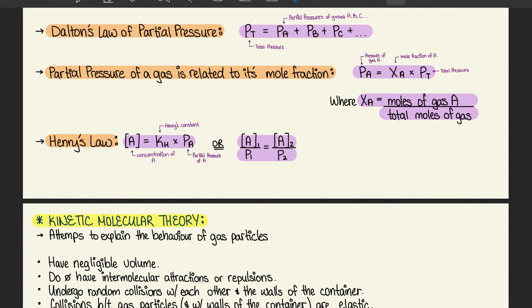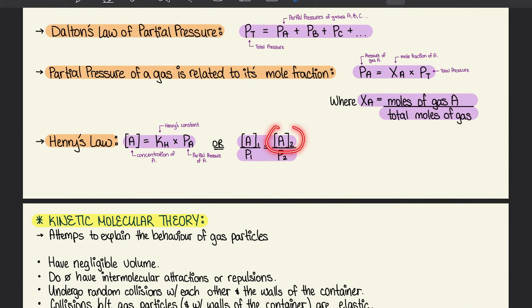Moving on to Henry's law: the concentration of A equals k_H, which is Henry's constant, times P_A, which is the partial pressure of A. We can also rewrite this as C_A1/P₁ = C_A2/P₂ when comparing two different conditions.